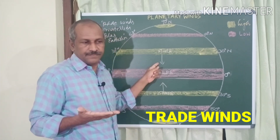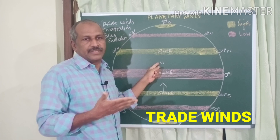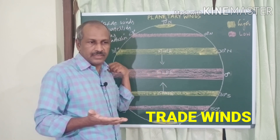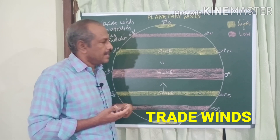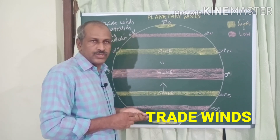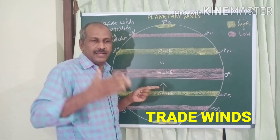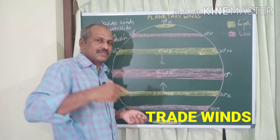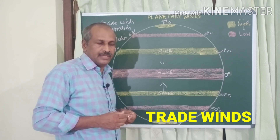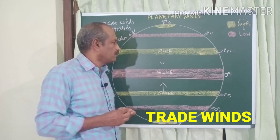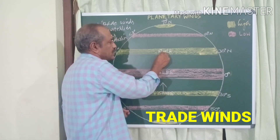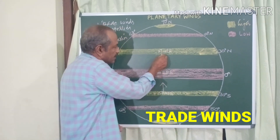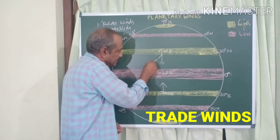As a result of the Coriolis force, the wind gets deflected. In the northern hemisphere, it gets deflected to its right side — to the right of the direction of movement. So it will be deflected like this.